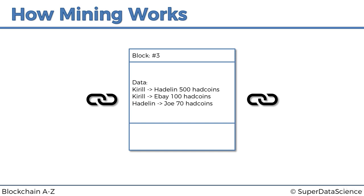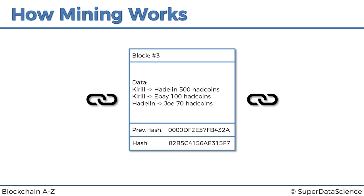The block also has a field for the previous hash — the hash of the previous block. This is a very important feature of blockchains because that's how the cryptographic link is facilitated between them. Finally, we've got a field for the hash of the current block. We take the block number, the data, and the previous hash, put them all into a hashing algorithm, and it spits out a hash.